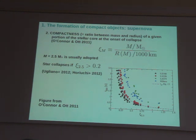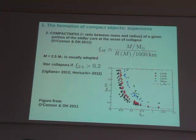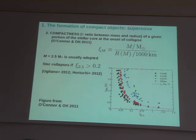Most people take 2.5 solar masses, which means you are well inside the carbon-oxygen core, basically at the iron core. This parameter measures how small is the radius that encloses 2.5 solar masses when the star is at the onset of core collapse. O'Connor and Ott did hydrodynamical simulations of supernovae collapse in one dimension and found dependencies of several properties of the star and of the collapse on the Xi parameter.